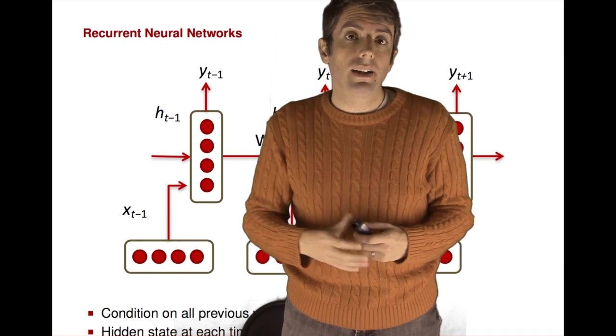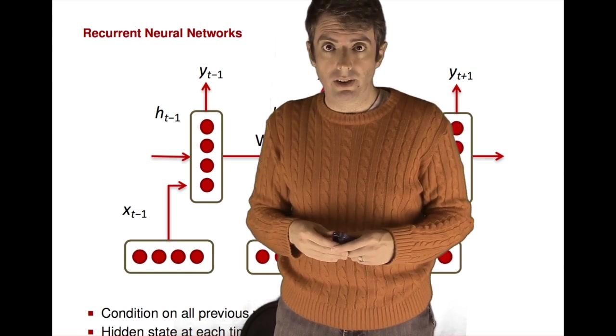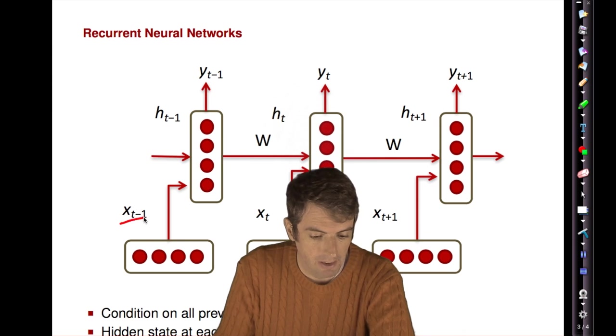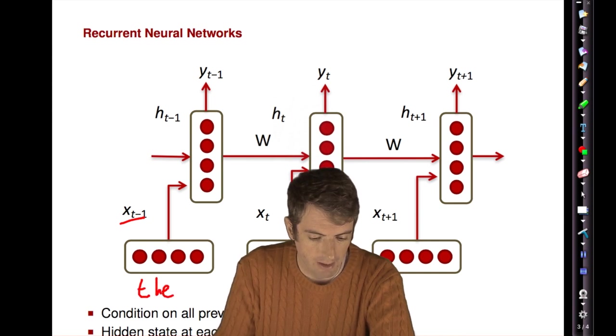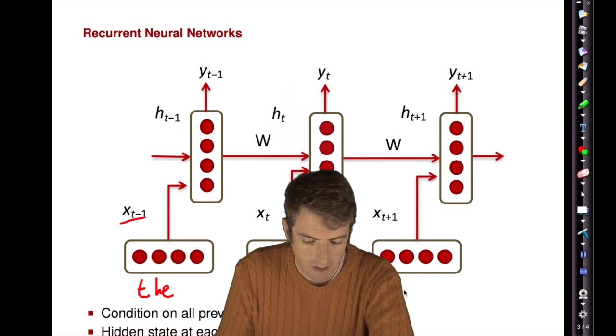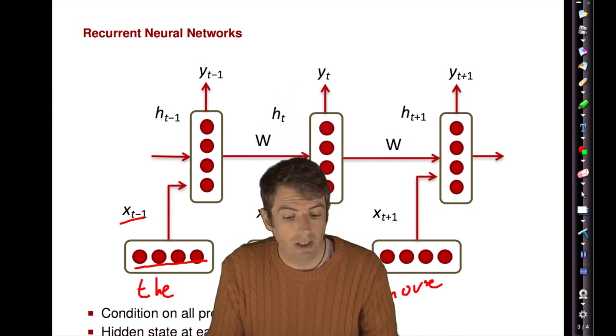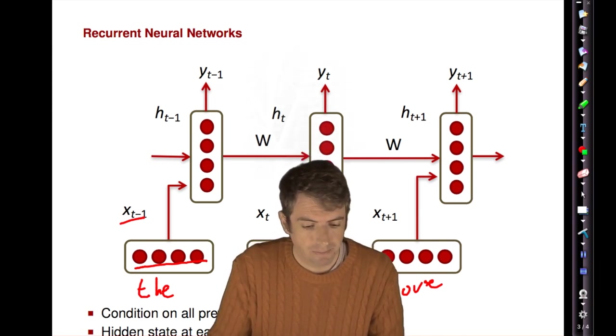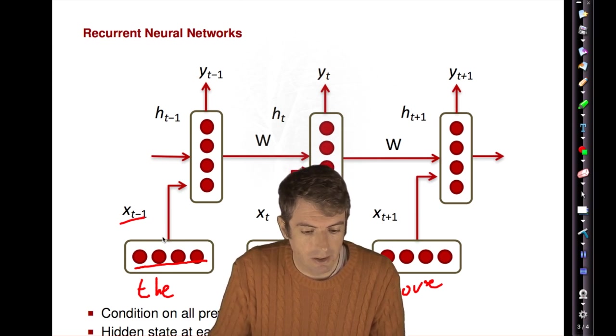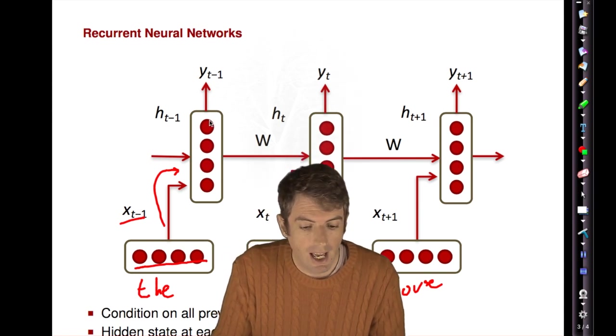The alternative that we're going to be talking about today is a class of sequence models that will get more and more complex. The first sequence model that we'll talk about is called a recurrent neural network. At each time step, you have your input. This is your observed word. If your sequence of words is the small house, then at each input time step, you have the vector representation of the word. This is going to be learned by the recurrent neural network, but you can initialize this by things like word2vec. Then that gets fed into a hidden layer.